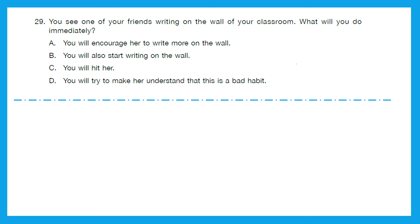Question 29: You see one of your friends writing on the wall of your classroom. What will you do immediately? You will encourage her to write more on the wall? No. You will also start writing on the wall? No. You will hit her? Not at all. You will try to make her understand that this is a bad habit and this is the right action you should take. Option D is the right answer.